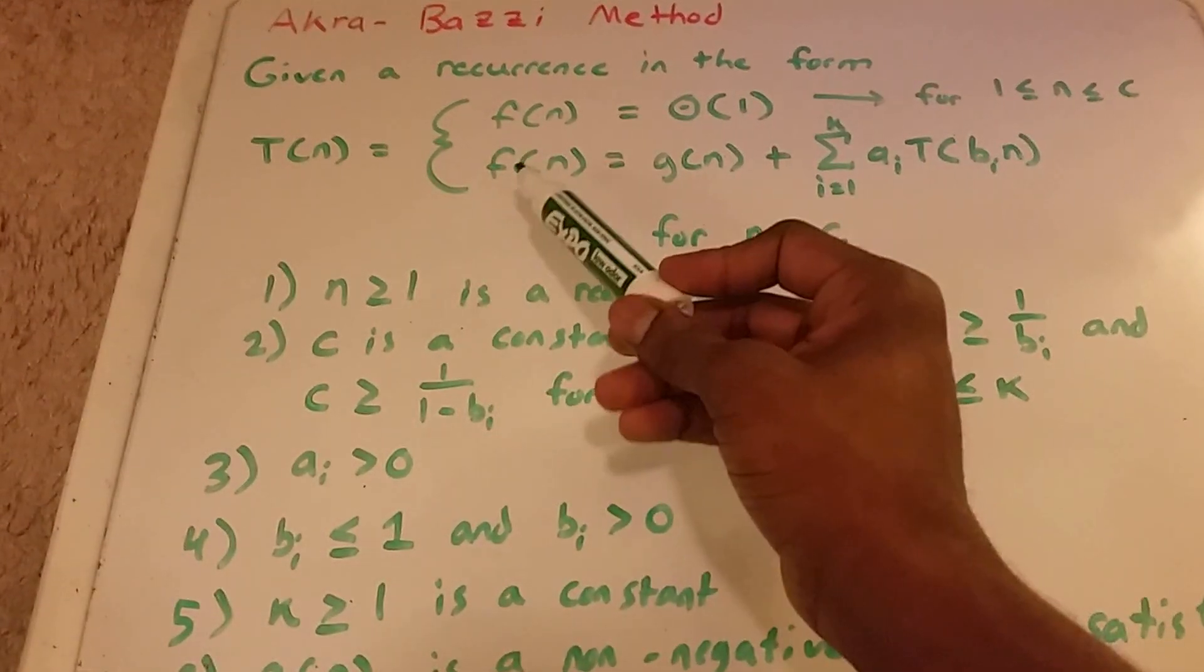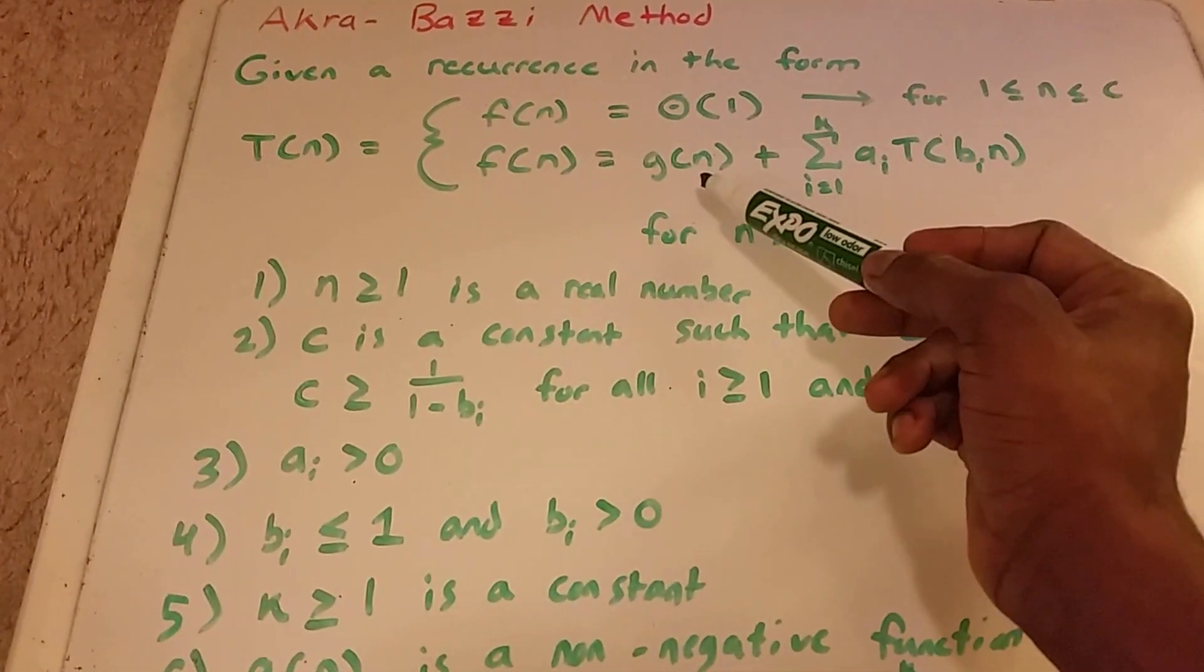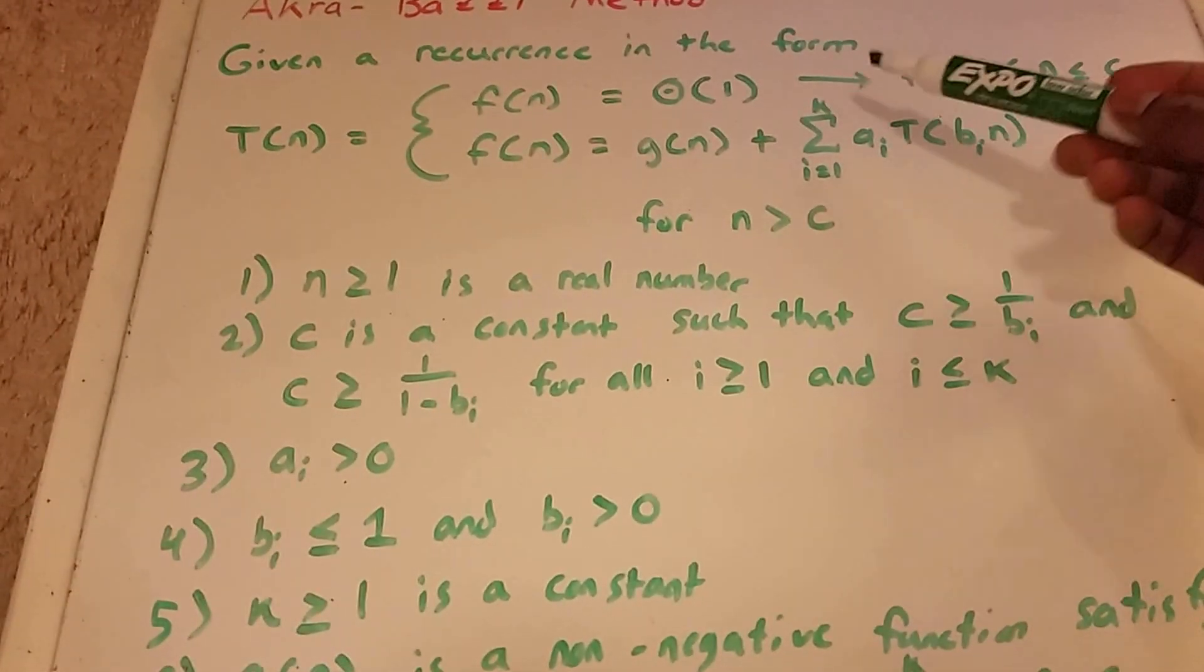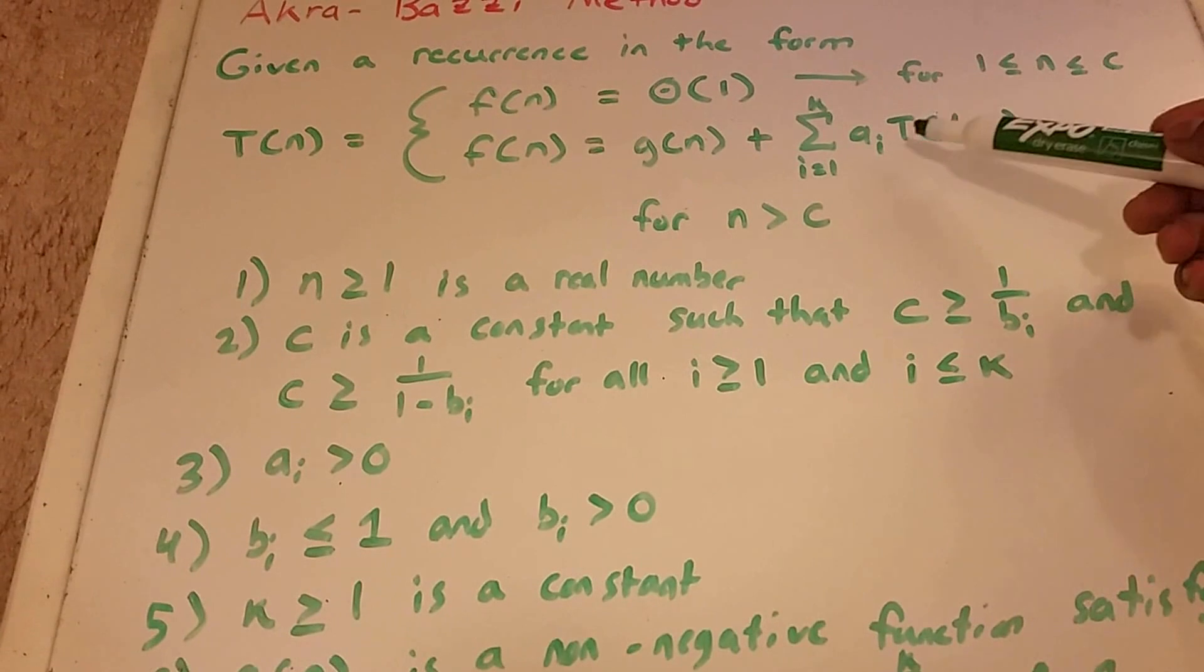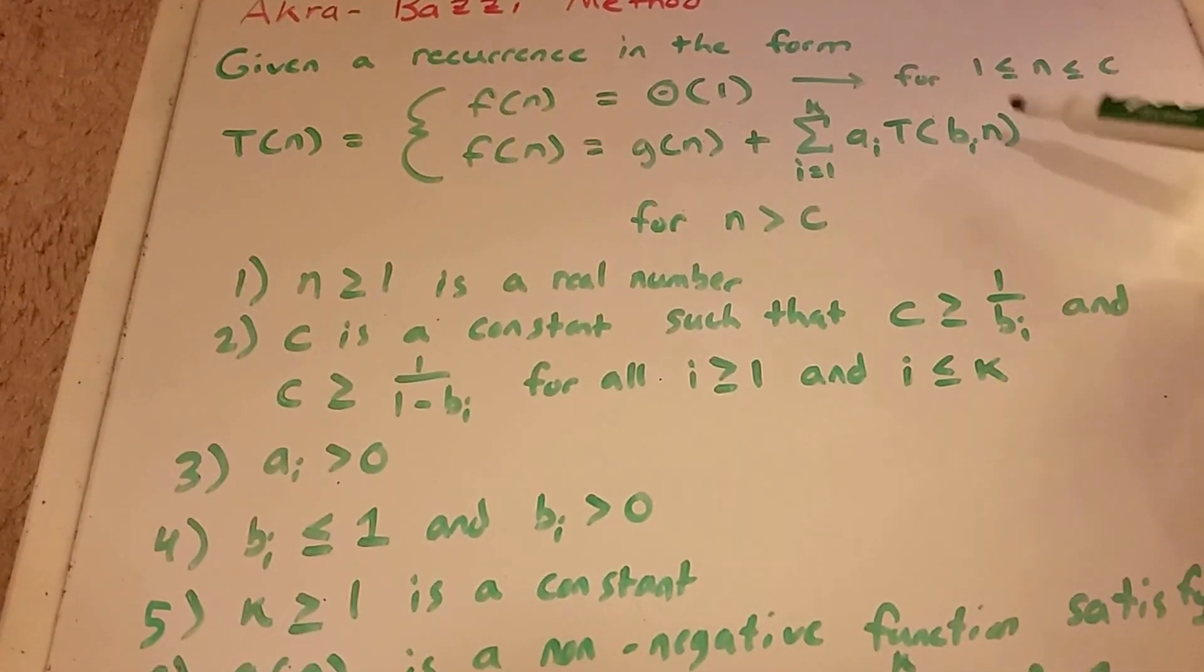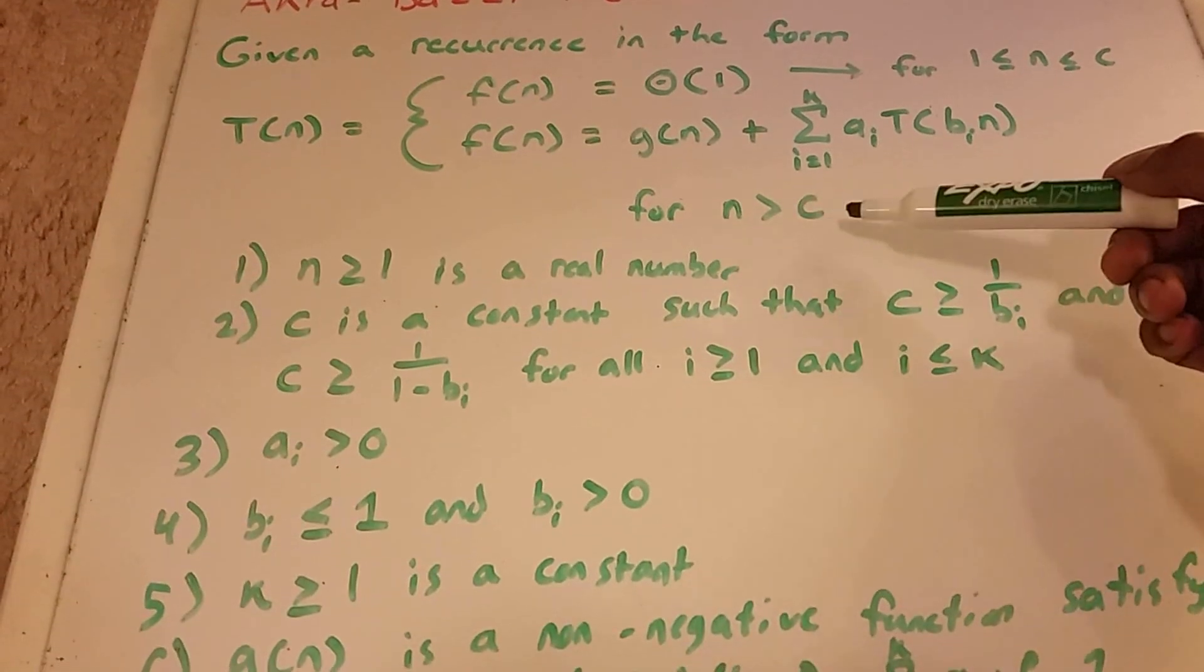and F of n equal to G of n plus the summation from i equals 1 to k of a subscript i times T of b subscript i times n, for all n greater than some constant.